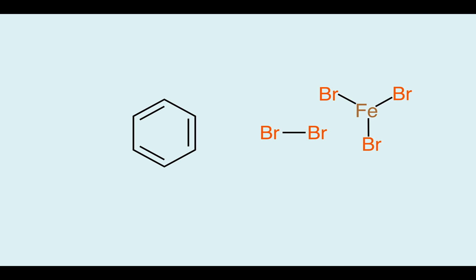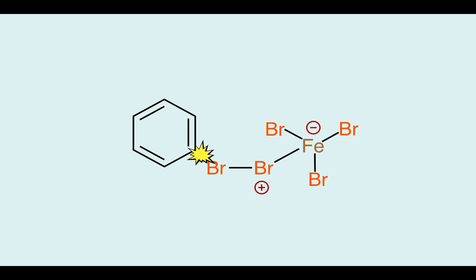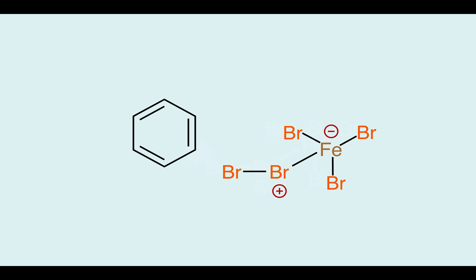However, if we add in an iron catalyst, this can associate with the bromine, building a positive charge on it. Now when benzene bumps into this activated bromine species, it can react.